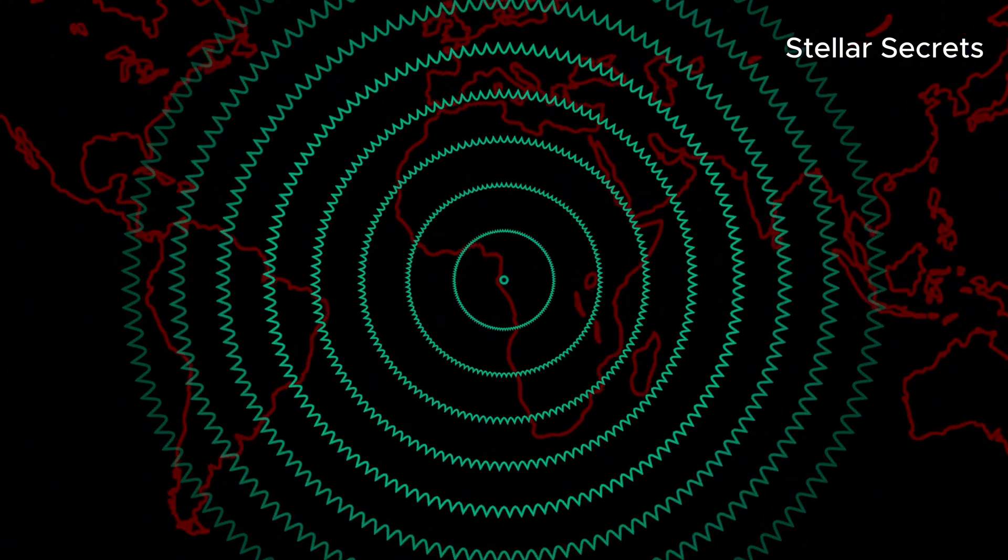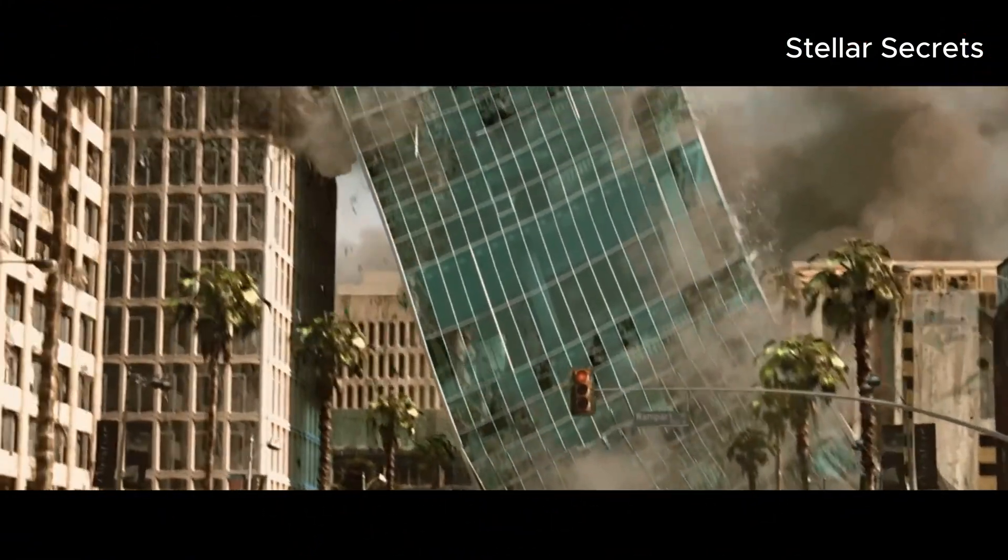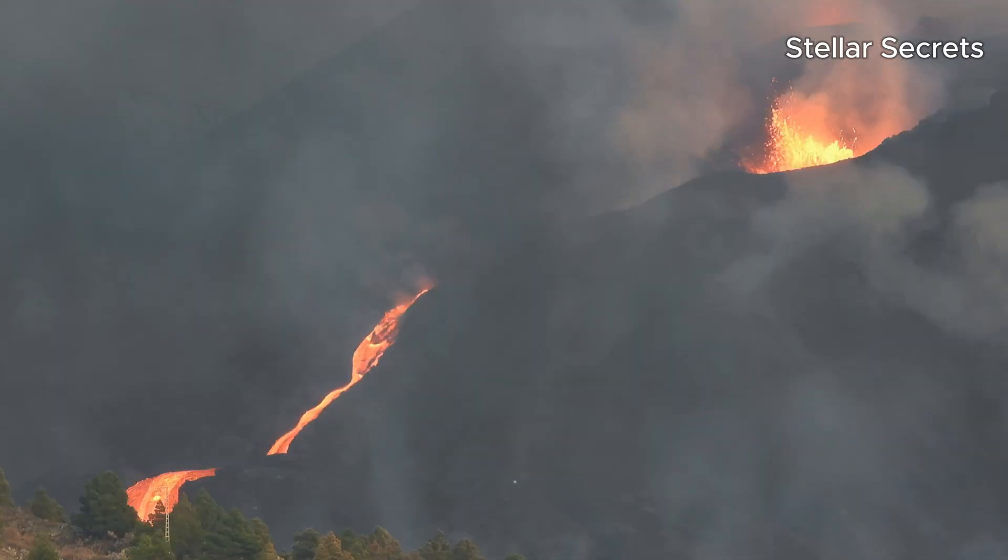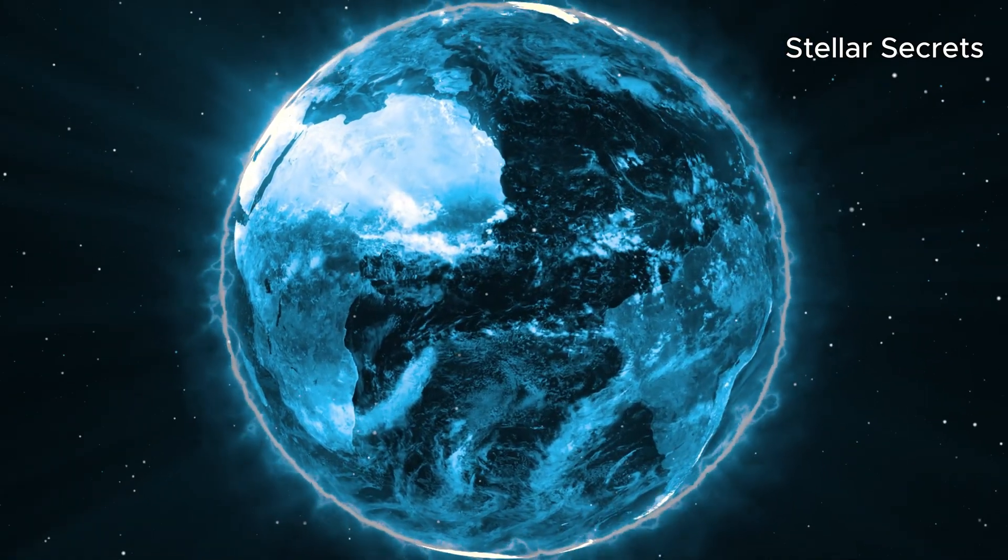The rogue planet's gravity triggers massive earthquakes. The ground shakes violently. Buildings fall. Volcanoes erupt with fury, spewing ash and lava. The sky darkens, blocking out the sun. The world becomes cold.